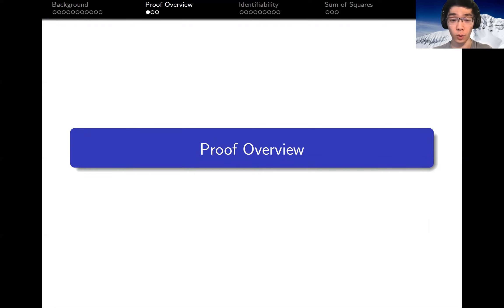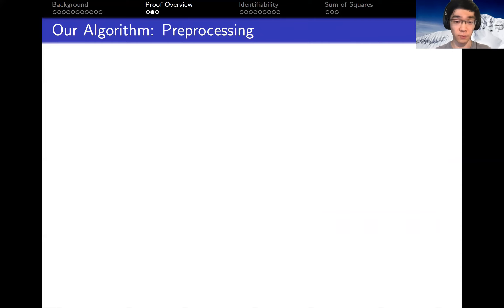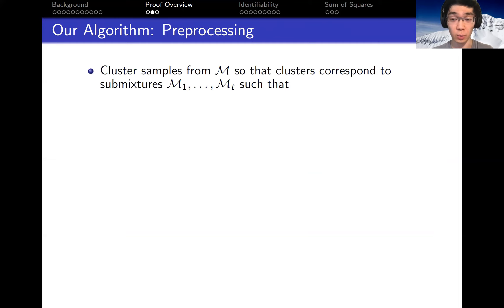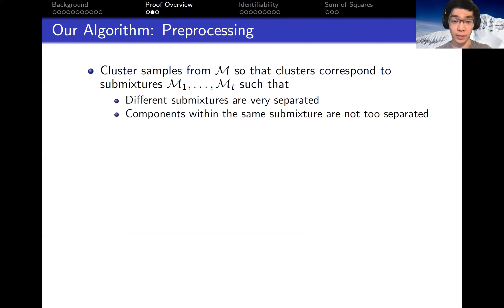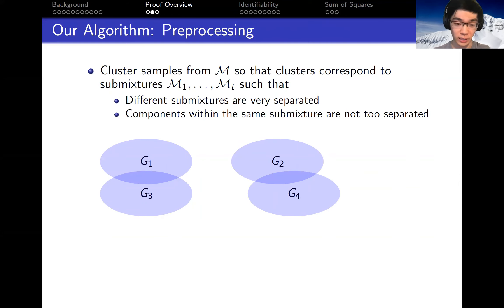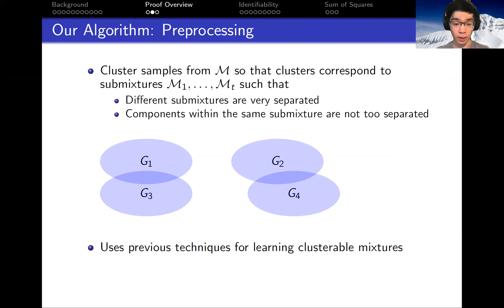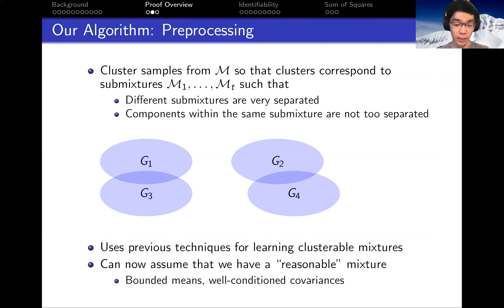Now let me give an overview of our proof. Our algorithm has two steps. The first step is a preprocessing step where we cluster the samples into submixtures. We want the submixtures to be very separated so our clustering has good accuracy, but also the components within the same submixture should not be too separated. For instance, in the following diagram, we want to cluster G1 and G3 together, and samples from G2 and G4 together. This can be done with small modifications to previous techniques for learning a clusterable mixture of Gaussians.